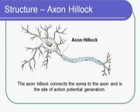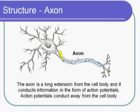The axon hillock is a region that connects the soma to the axon, and the axon hillock is the site of action potential initiation. The axon is a long extension from the cell body and it conducts information in the form of action potentials. The normal direction of action potential conduction is away from the cell body down the axon.